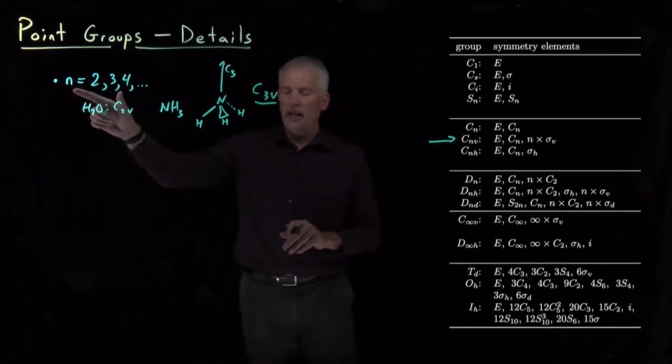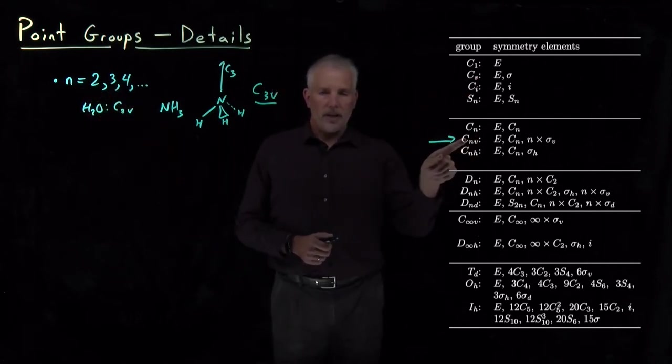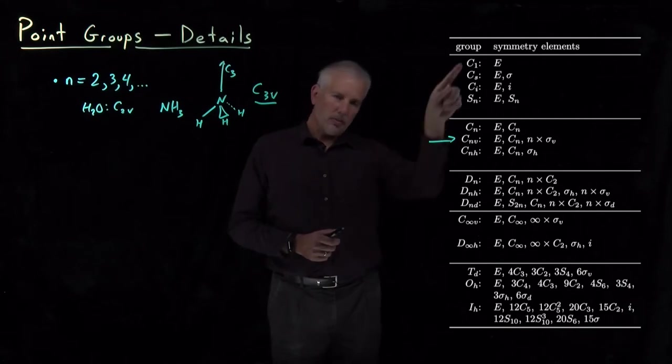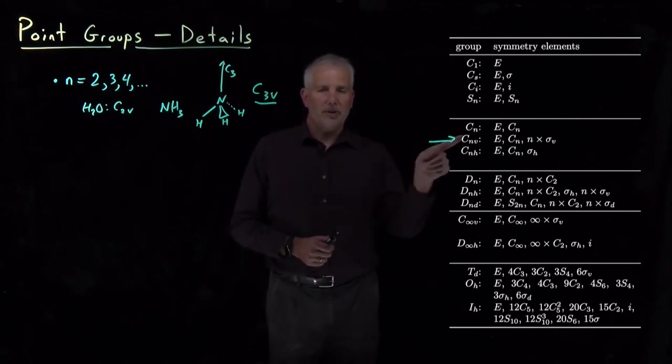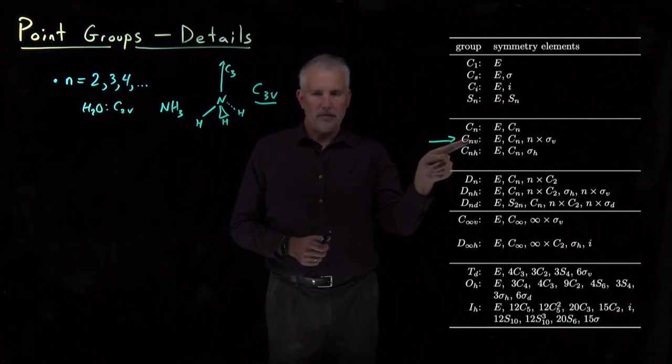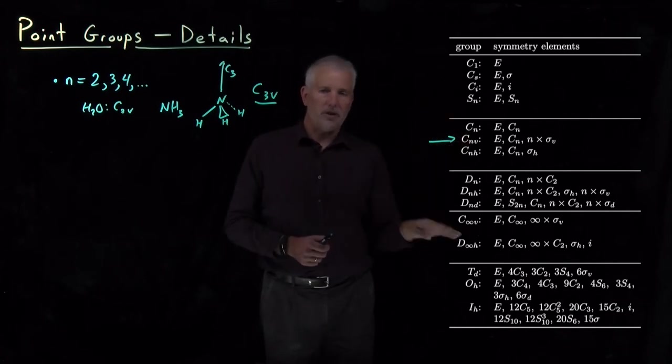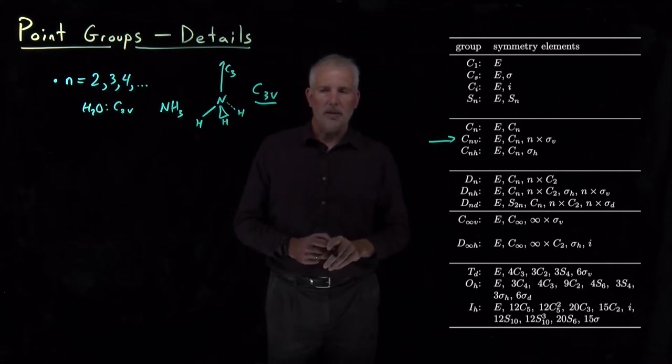N in this chart could stand for any integer 2 or larger. So, it's a little bit of an exaggeration to say there's only a dozen point groups. If I count C2V and C3V and C4V and so on, there's more than are just listed here. I've just collapsed many of them into one line on the chart.